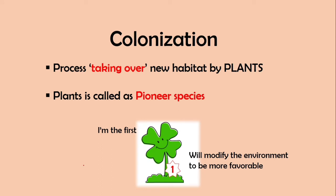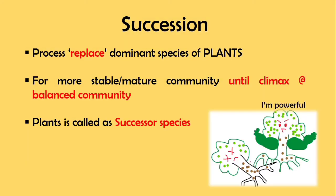This pioneer species will modify the environment to be more favorable. Pokok ini will modify soil as well as the air and other abiotic factors to be more favorable. So bila dah environment itu favorable, that species undergo process succession.